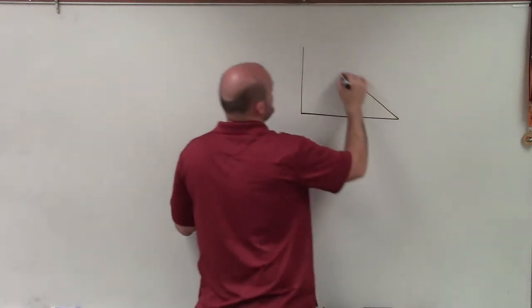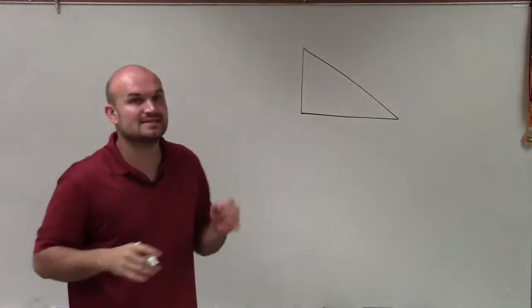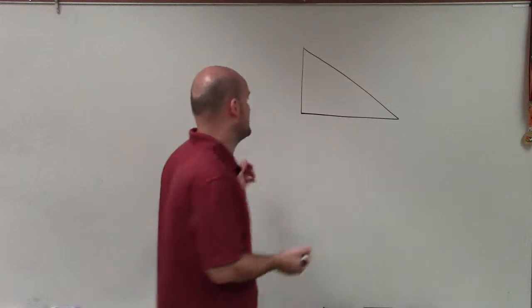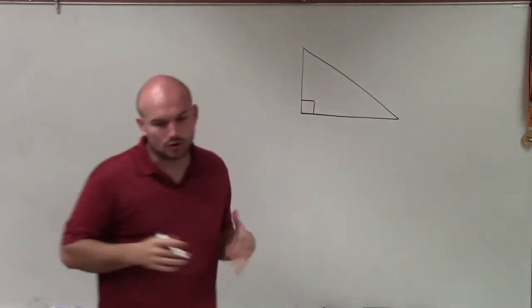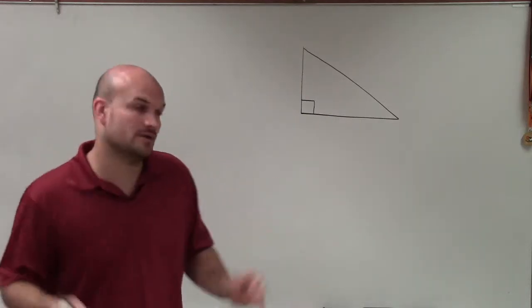So a right triangle is any triangle that has one right angle. The way that we denote the right angle is we draw a little square in the corner. That denotes the right angle.